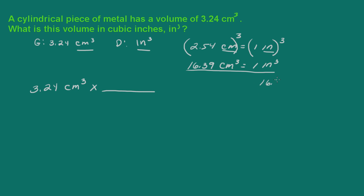So we have 16.39 cubic centimeters per cubic inch or I can write 1 cubic inch per 16.39 cubic centimeters. So I want to cancel out cubic centimeters and end up with inches. So I'm going to use this conversion here.